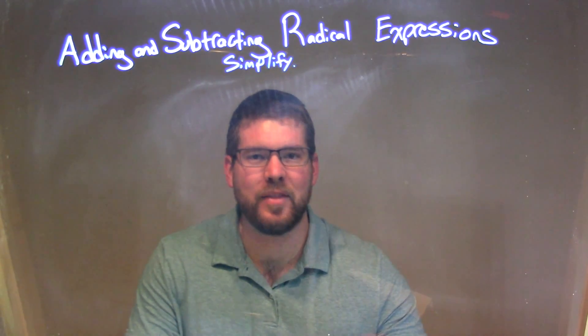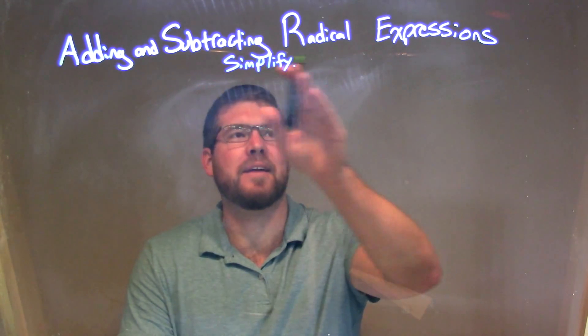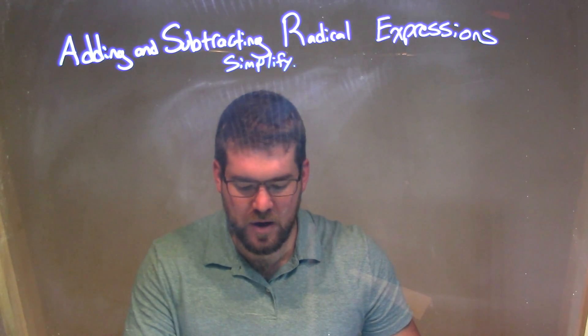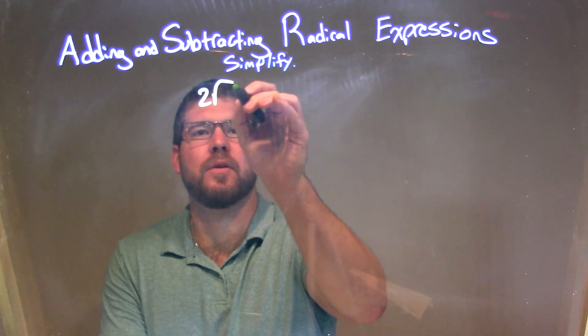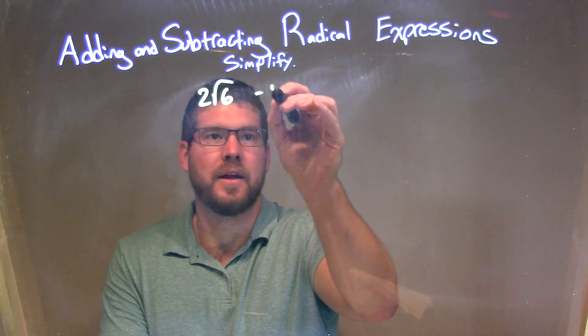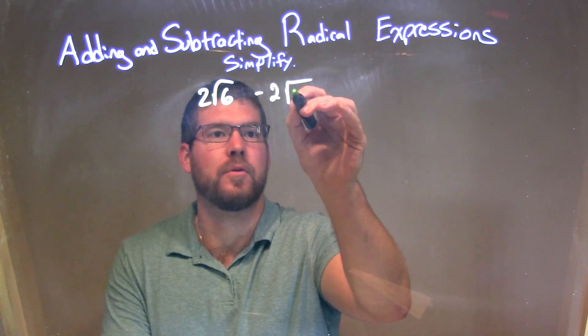Hi, I'm Sean Gannett and this is Minuteman, and today we're going to learn about adding and subtracting radical expressions. So if I was given this expression, 2 times the square root of 6 minus 2 times the square root of 24.